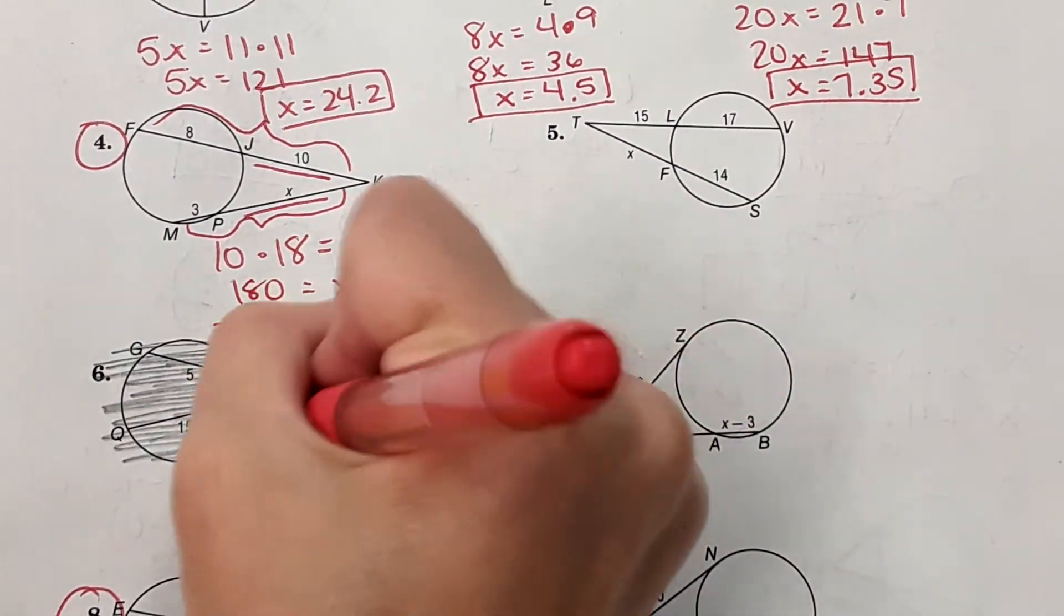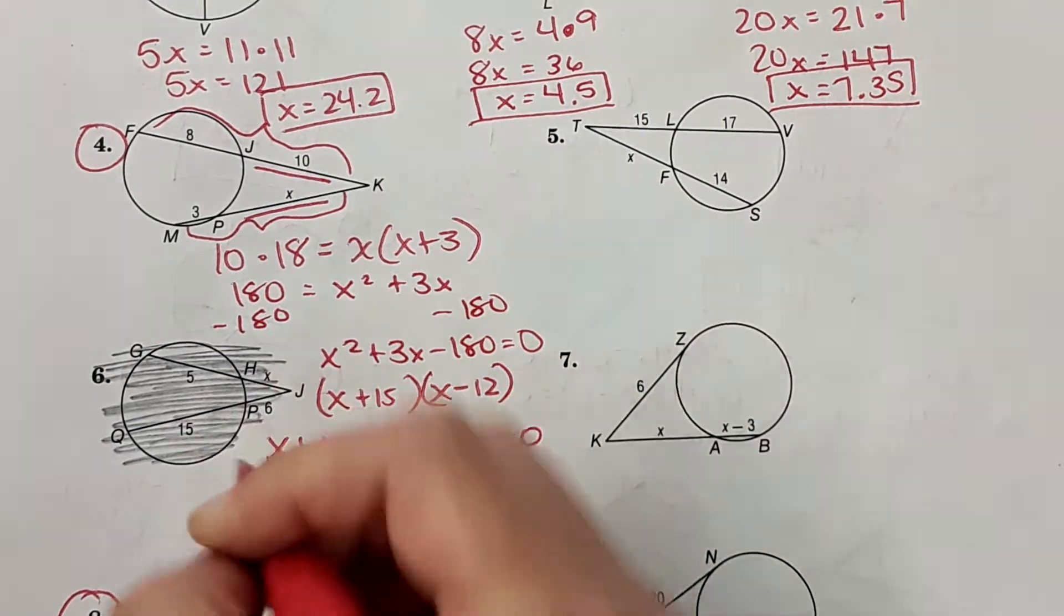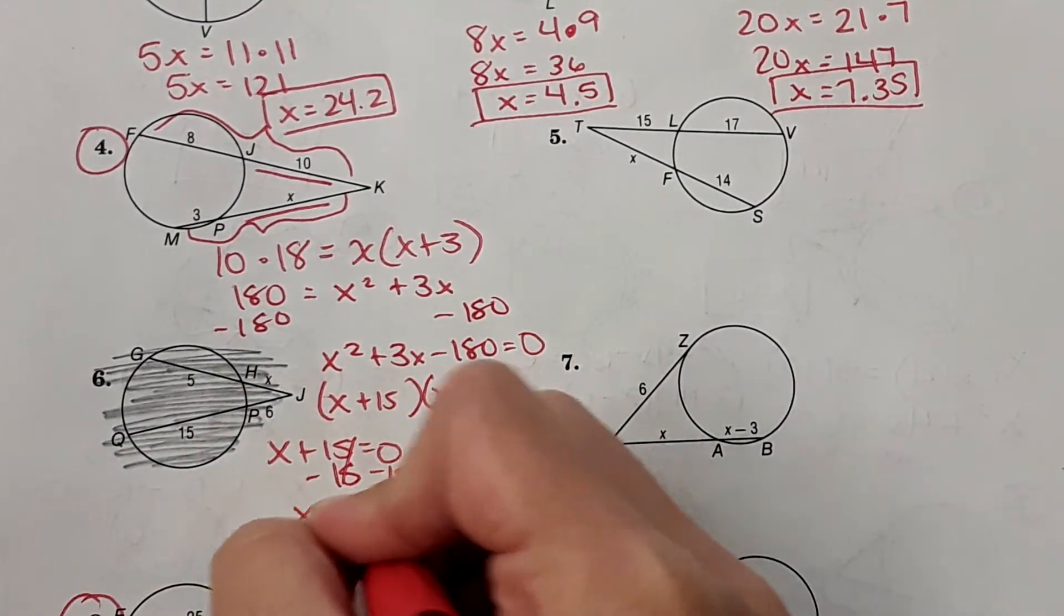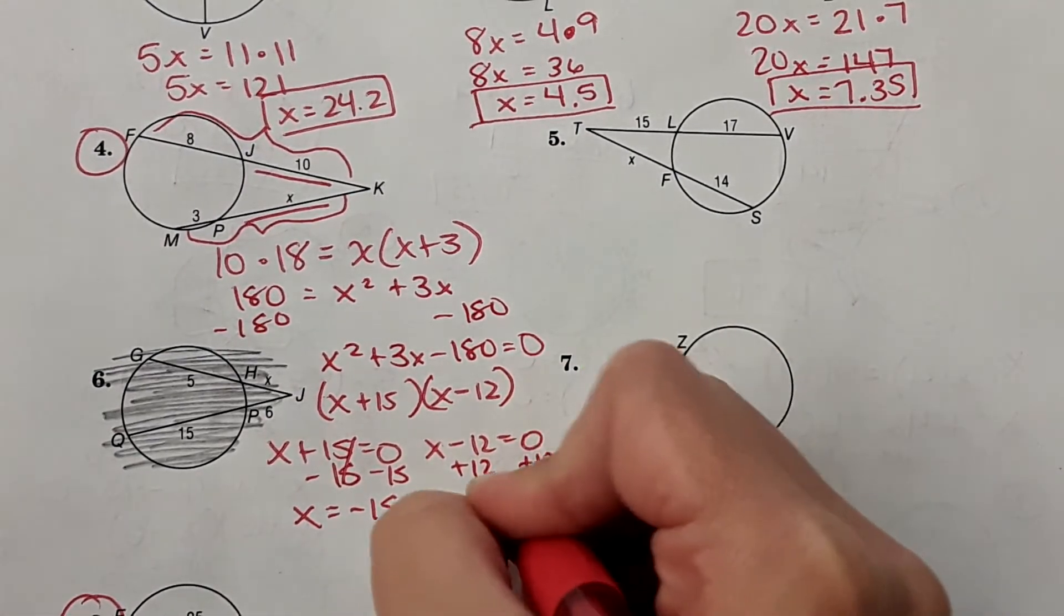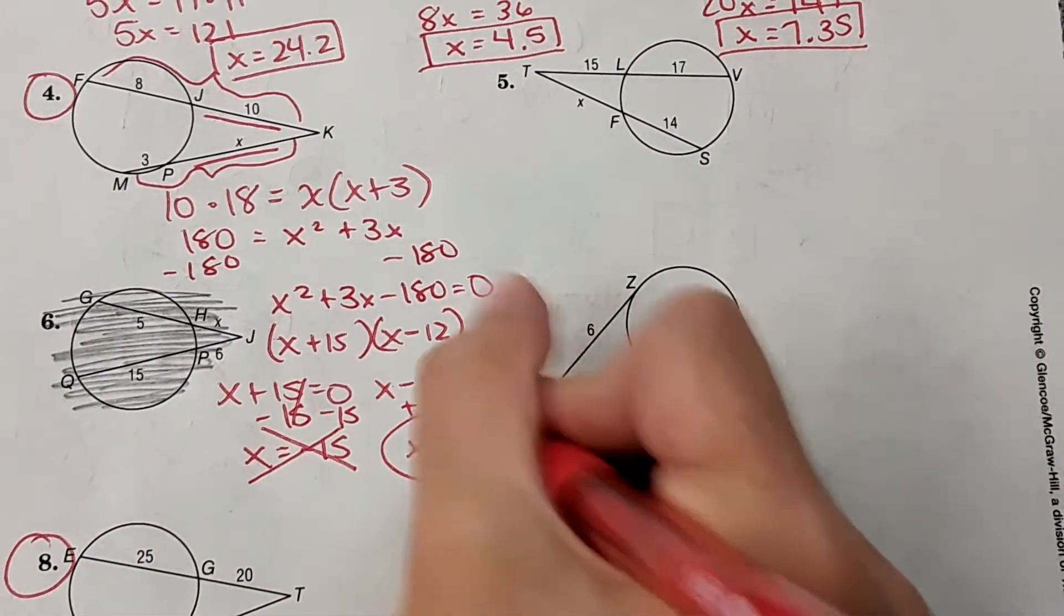And then once you have these factors, set them equal to 0. This one can't be an answer, so it's just x equals 12.